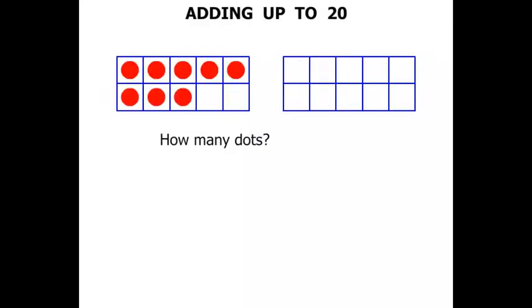How many we've got here? Well, five and three is eight. What about now? Five, ten, fifteen.